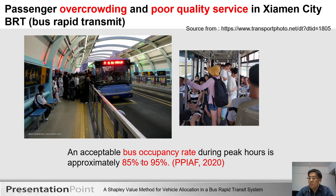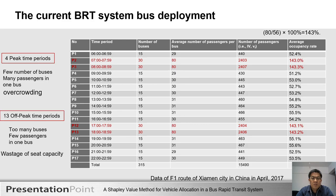As you can see in these photos, there is passenger overcrowding and poor quality service in Xiamen city BRT. An acceptable bus occupation rate during peak hour is approximately 85% to 95%. The current BRT buses are overcrowded in the full peak time period from P2 to P17, because there are few buses and many passengers per bus. The average occupation rate per bus is 143%.